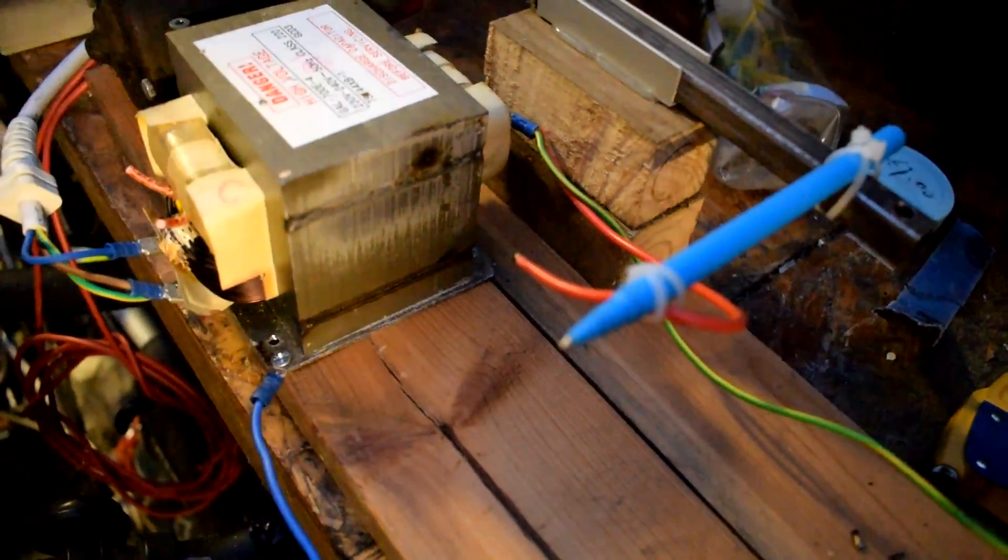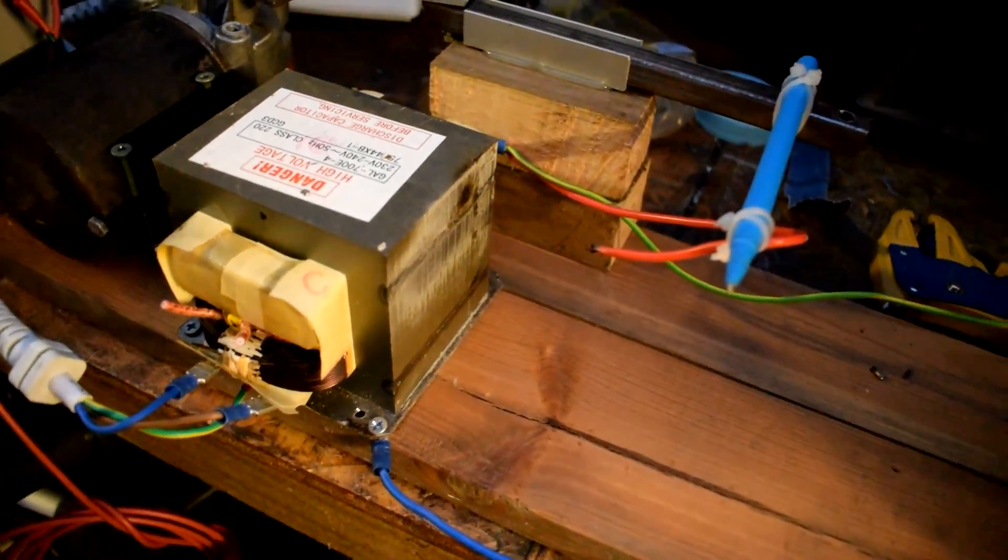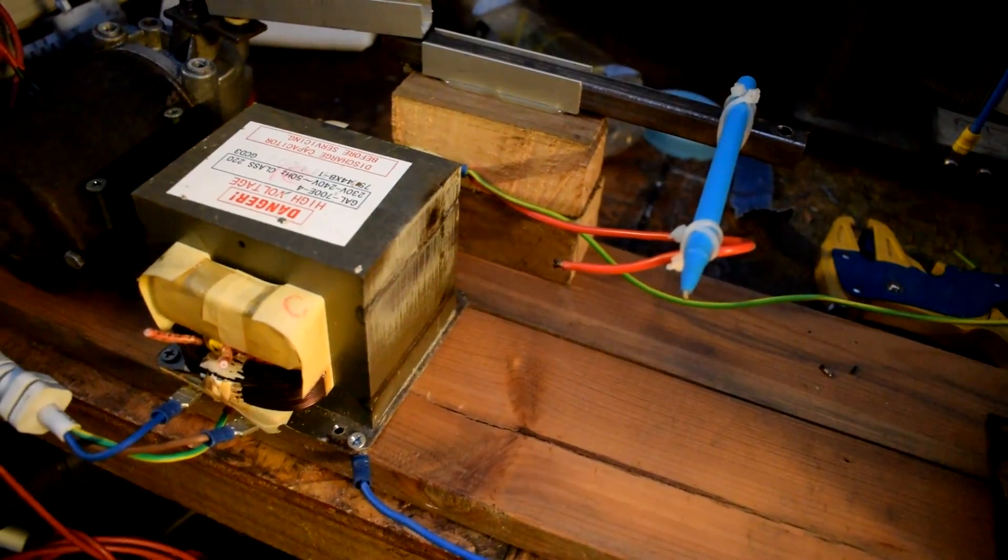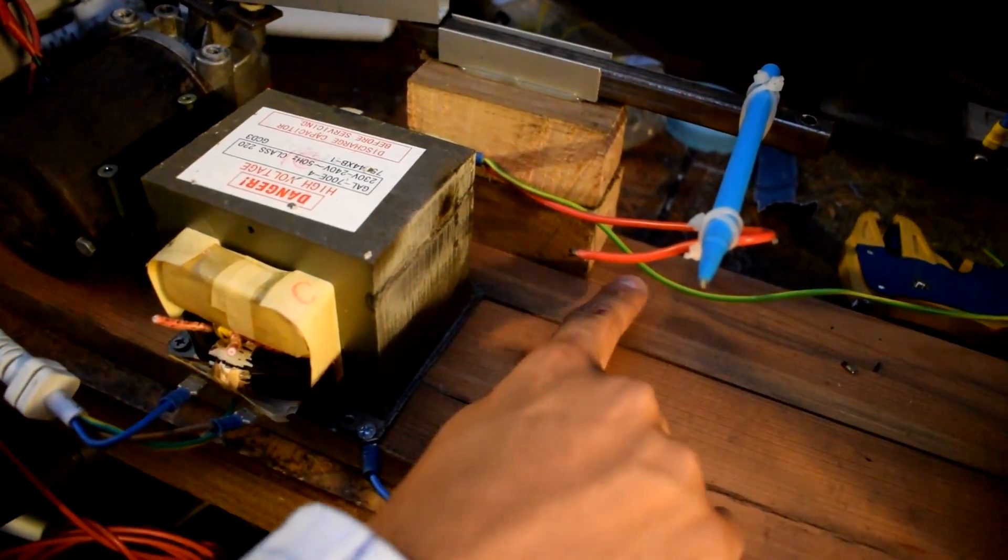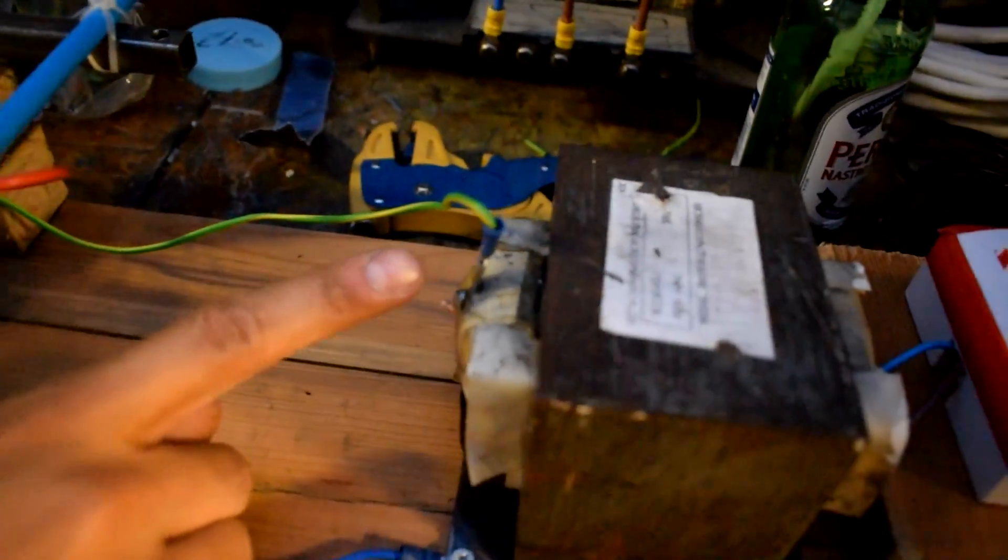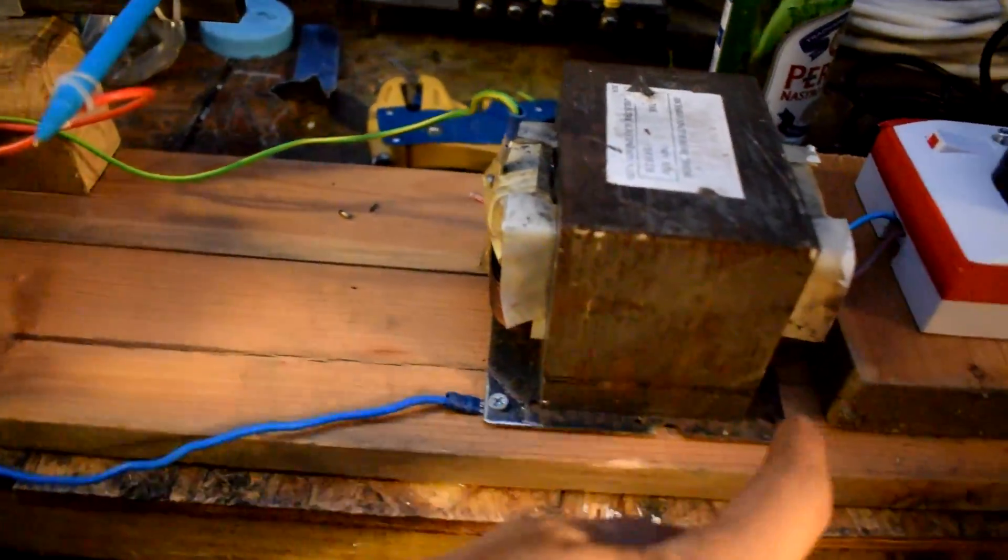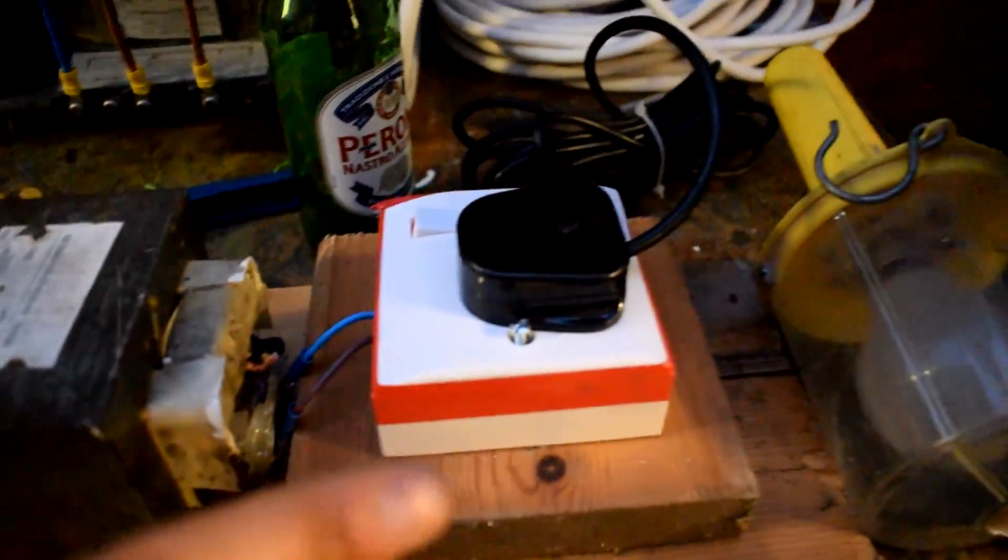attached with cable ties for extra safety. So 240 into the MOT and about 2, 2 and a bit KV out. Which connects into the second MOT, into the hot of that one, and then you get 240 volts out here. Which goes through the plug into the little test lamp.